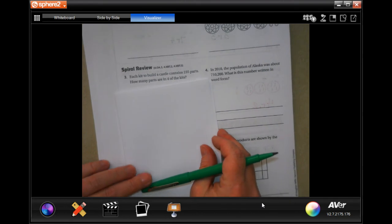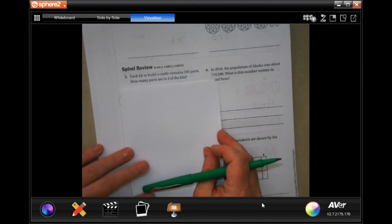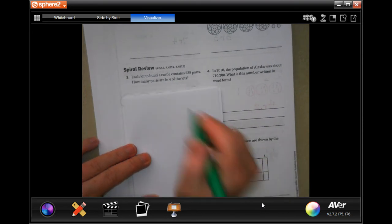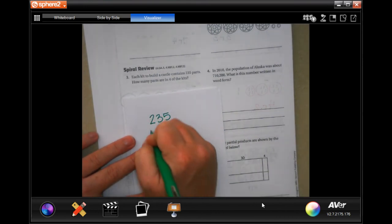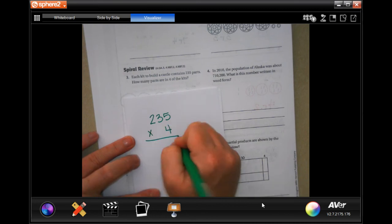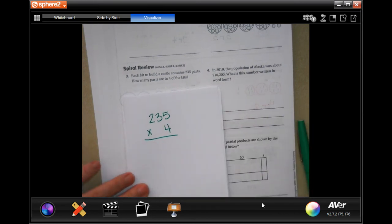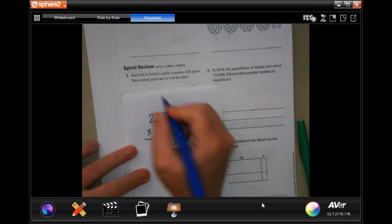Each kit to build a castle contains 235 parts. How many parts are in four of those kits? So 235 and we have four of those kits.